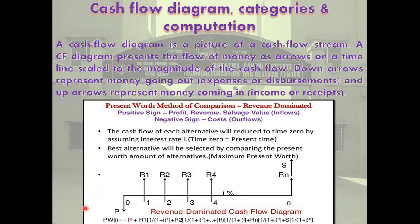The cash flow of each alternative will be reduced to time 0 by assuming an interest rate, where time 0 equals the present time. The best alternative will be selected by comparing the present worth amounts of alternatives — maximum present worth.